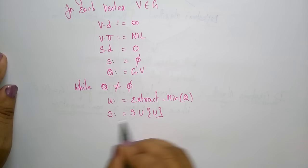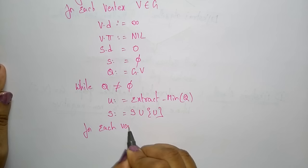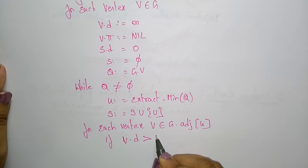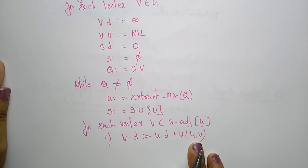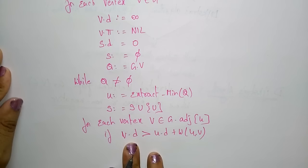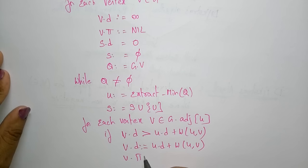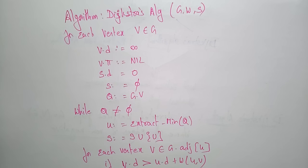You combine that extract-minimum value with the set S. For each vertex V belonging to the edges of U: if V.d is greater than U.d plus W(U, V), then set V.d equal to U.d plus W(U, V), and finally set V.pi equal to U. This is the relaxation step of Dijkstra's algorithm.